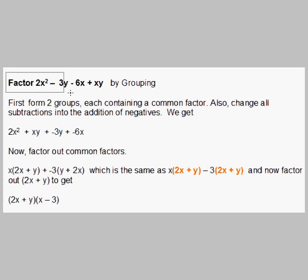Now we're going to look at an example where we factor an expression by grouping. We're going to factor 2x² - 3y - 6x + xy by grouping. The first thing you want to do here is form two groups that have common factors. 2x² and xy both have the factor x, so I'm going to group those together as one group: 2x² + xy.